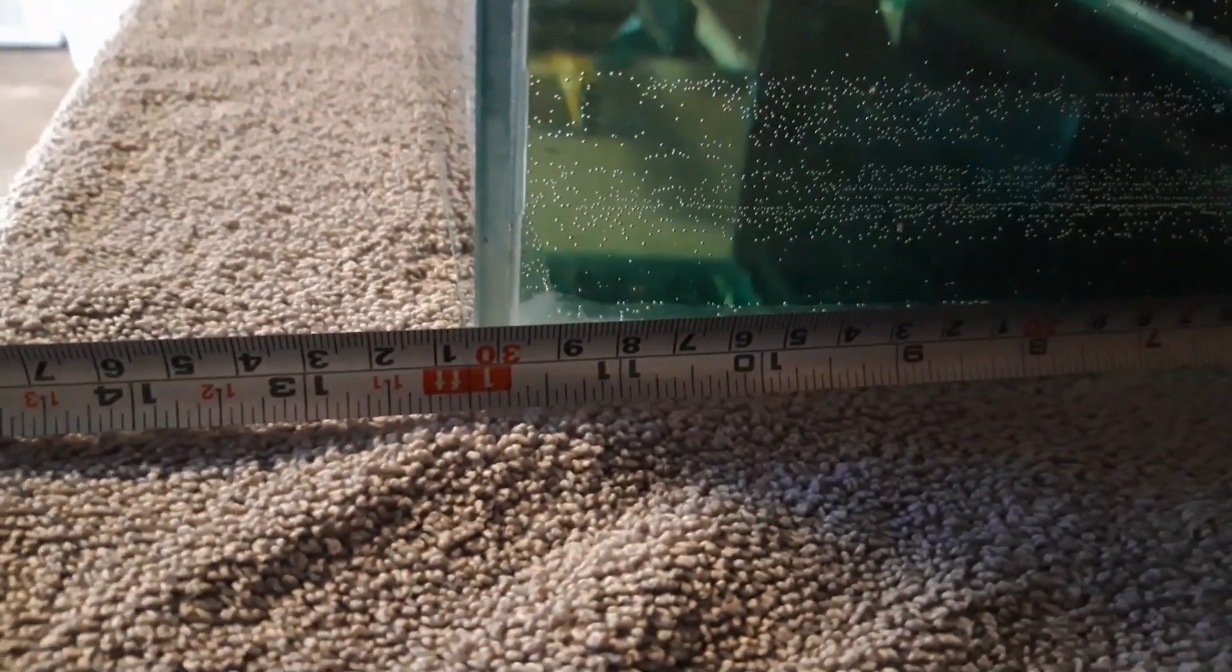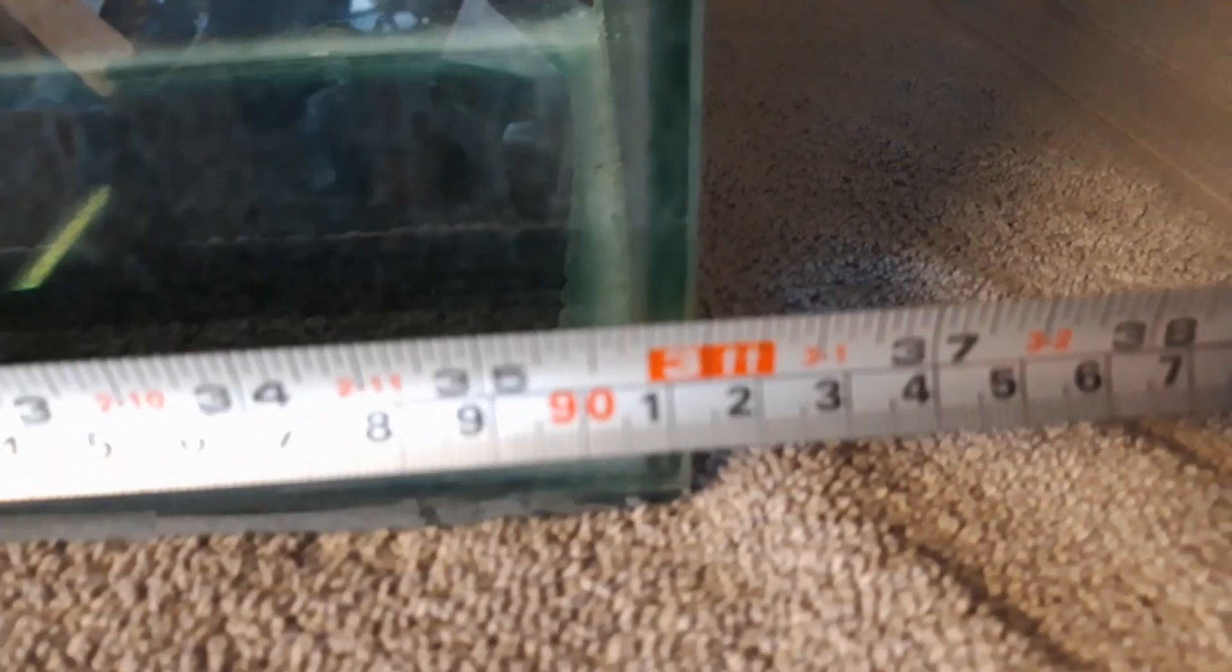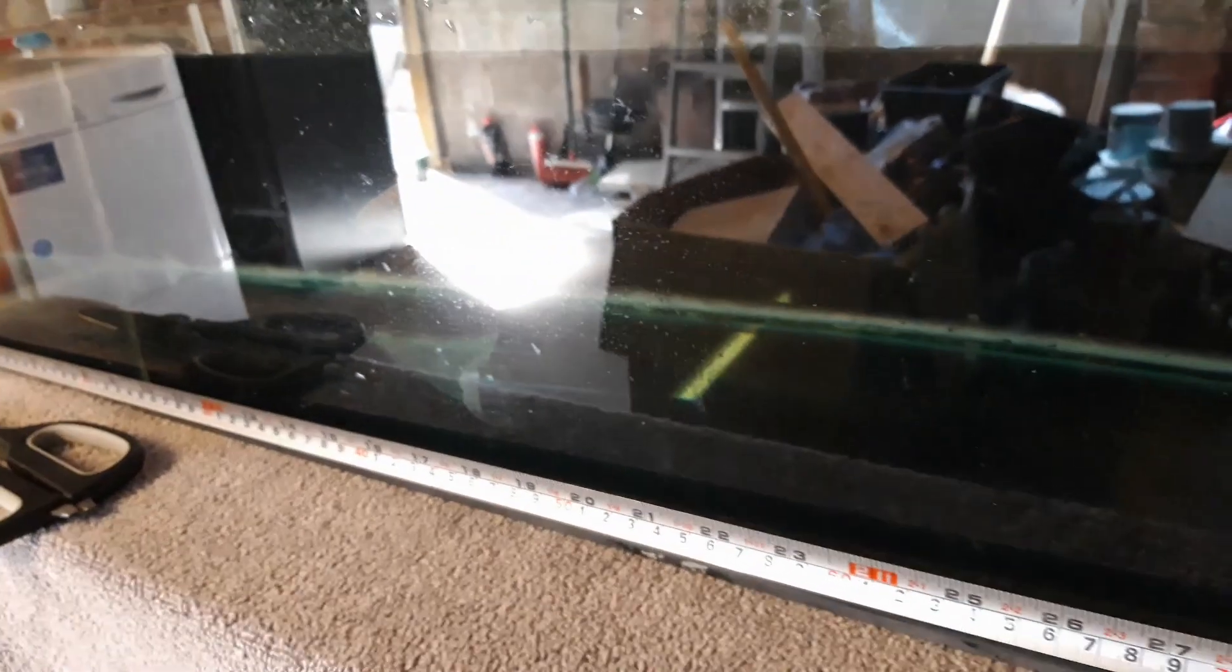If you want the dimensions of the tank, the dimensions of the tank are one foot by three foot, one foot by three foot, seven inches deep.